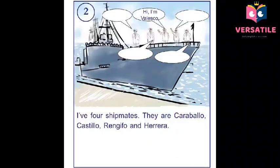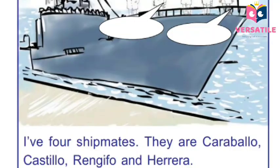Let's go to picture number two. What do you see in this picture? You can see the ship Caldas, and five shipmates are there including Velasco — Velasco and his four friends. You can write under the picture: 'I have four shipmates. They are Carabello, Castillo, Rangifo, and Herrera.'